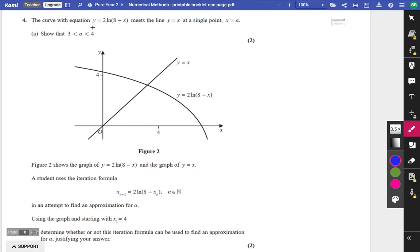Okay, so it says the curve with equation y equals 2 ln of 8 minus x meets the line y equals x at a single point alpha. Show that alpha lies between 3 and 4. So it looks like what it's actually trying to get us to do here is to find out whether there is a solution for these two things. What I think I would do to begin with is we've been told that y equals 2 ln of 8 minus x and also y equals x.